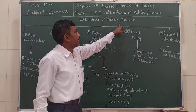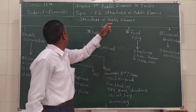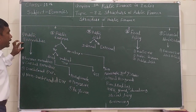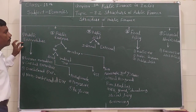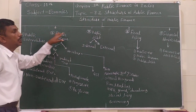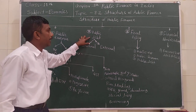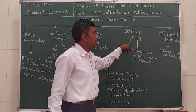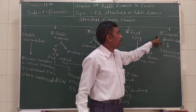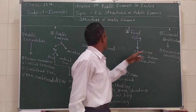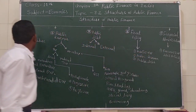The structure of public finance has five components: first, public expenditure; second, public revenue; third, public debt; fourth, fiscal policy; and fifth, financial administration.